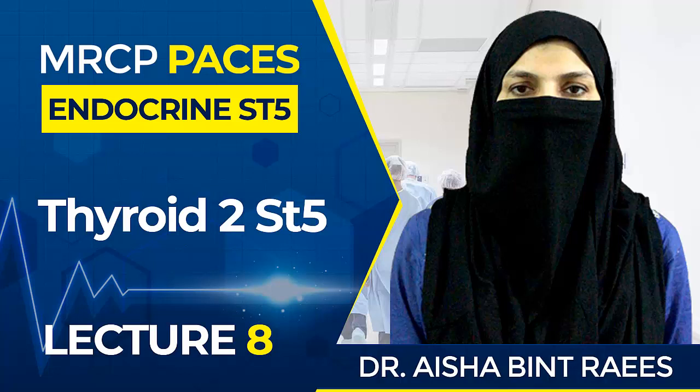Thyroid acropathy is essentially digital clubbing with subperiosteal new bone formation, and it may lead to total loss of hand function. Check the neck for goiter — in Graves disease there is usually diffuse goiter, though a nodular goiter may also be found. Diffuse enlargement is most common.